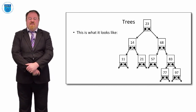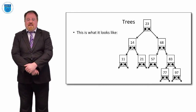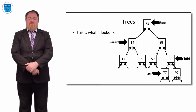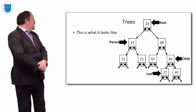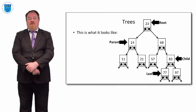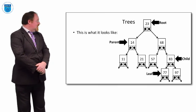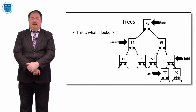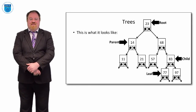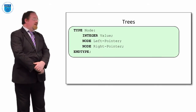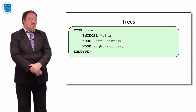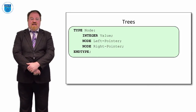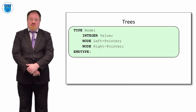This kind of structure, like a linked list, is very effective for certain operations, particularly in operating systems. In terms of terminology: the top node is called the root, any node with children is a parent, nodes underneath are called children, and the bottom-most nodes are called leaves. A node can be both a parent and a child. In pseudocode, we declare a node type with an integer value, a left pointer, and a right pointer — both of the same node type, making it a recursive definition.